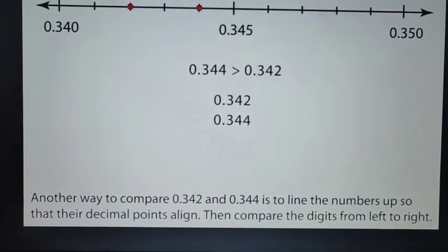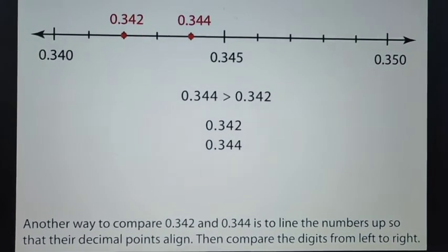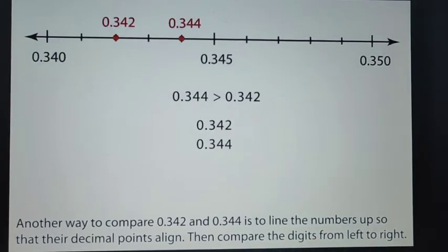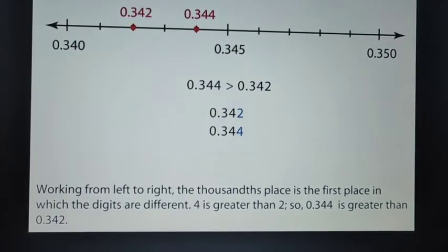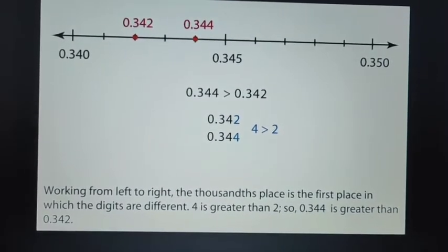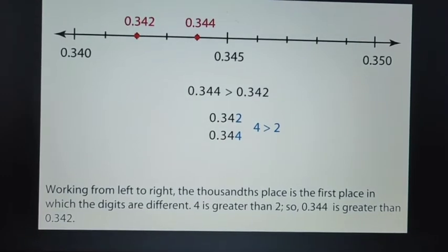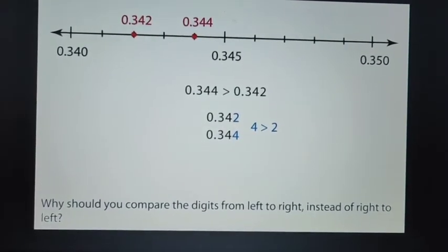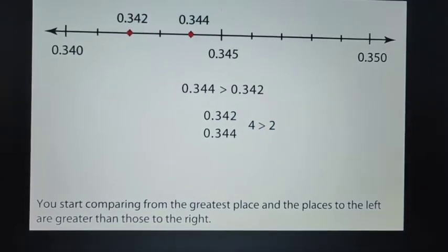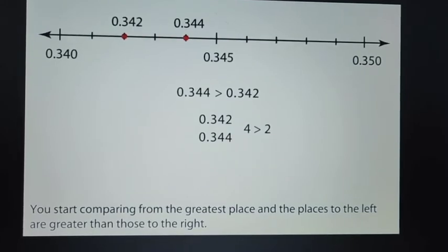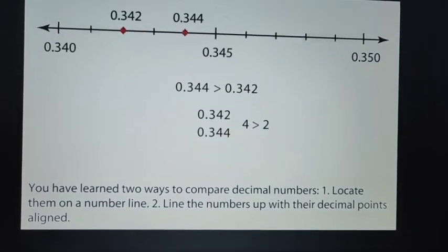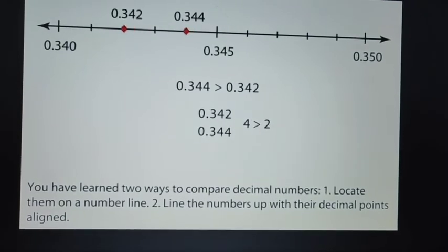Another way to compare 342,000s and 344,000s is to line the numbers up so that their decimal points align. Then, compare the digits from left to right. Working from left to right, the thousands place is the first place in which the digits are different. 4 is greater than 2, so 344,000s is greater than 342,000s. Why should you compare the digits from left to right instead of right to left? You start comparing from the greatest place, and the places to the left are greater than those to the right. You have learned 2 ways to compare decimal numbers. 1. Locate them on a number line. 2. Line the numbers up with their decimal points aligned.